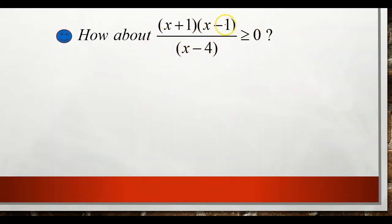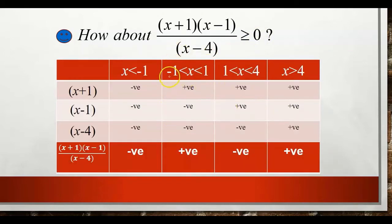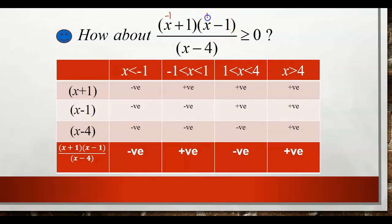How about the same inequality but with greater than or equal to 0? We use the same table. The difference is that this inequality includes 0. Since x+1 can equal 0 (when x = negative 1) and x−1 can equal 0 (when x = 1), these values are allowed. However, x minus 4 cannot equal 0 because the denominator must never be zero. So negative 1 and 1 are included in the solution.